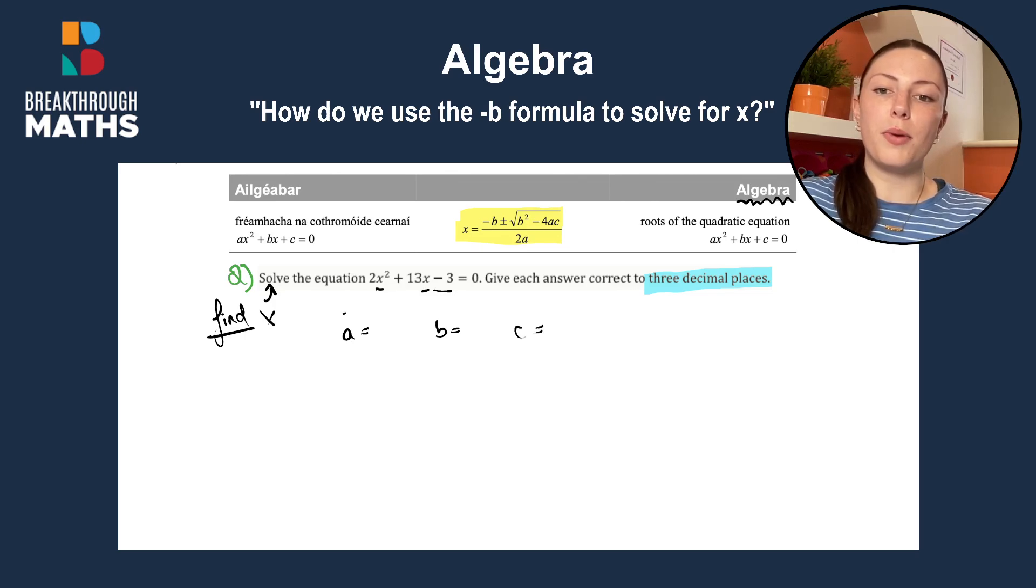So a is always the number in front of the x squared, b is always the number in front of x and c is always the number by itself. So that means that a is going to be 2, b is going to be 13, and c is going to be minus 3. So now we have all our letters and we can get into solving the minus b formula.